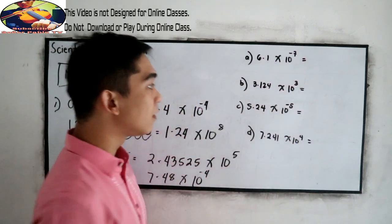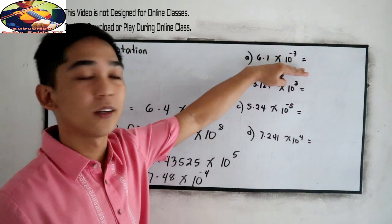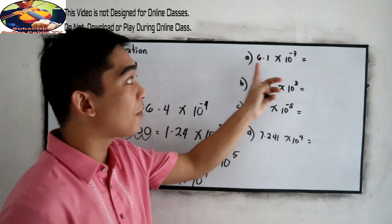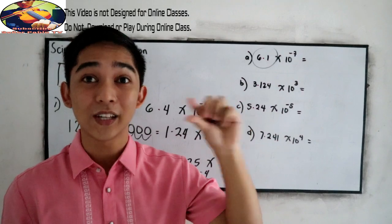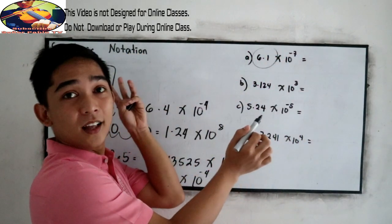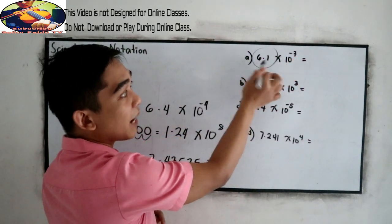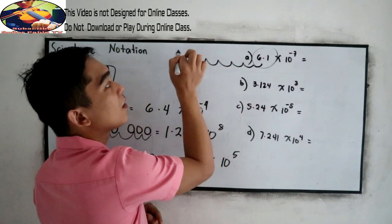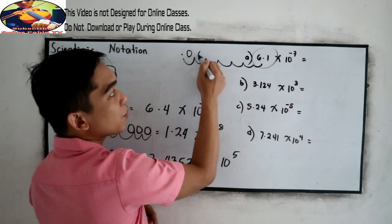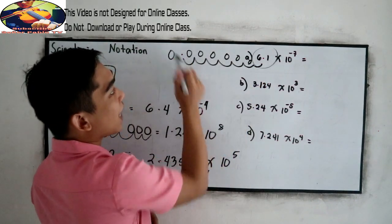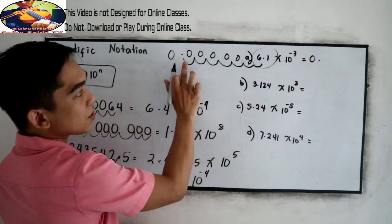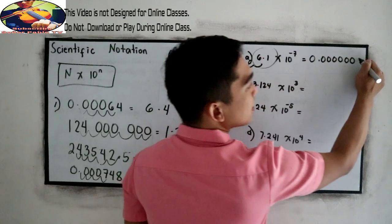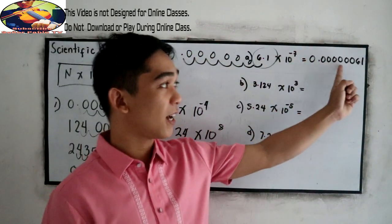For 6.1 times 10 raised to negative 7: since the exponent is negative 7, the value is very small. We move the decimal point to the left 7 times: 1, 2, 3, 4, 5, 6, 7. Then place the decimal point and fill in zeros — 1, 2, 3, 4, 5, 6 — then copy 61. This gives us the decimal form 0.00000061.